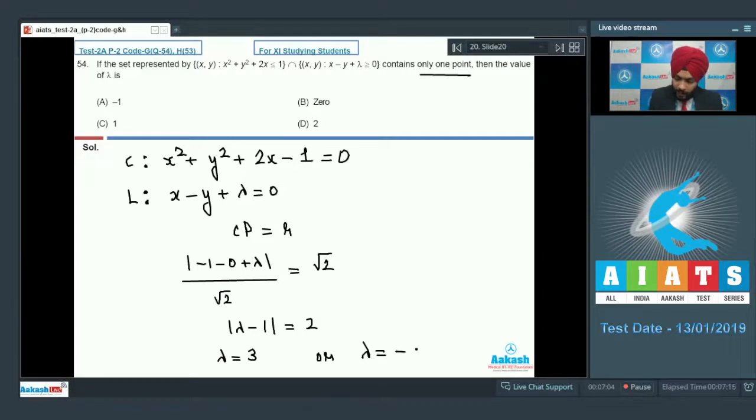So modulus of lambda minus 1 equals 2, which equals 2. Lambda is equal to 3 or lambda is equal to minus 1. So any of these, exactly one value of lambda out of these two will be the answer. According to the options, option number A is correct.